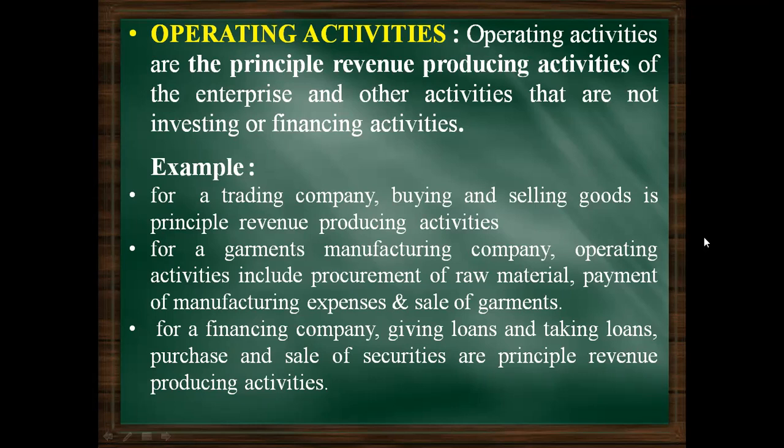For a garment manufacturing company, operating activities include purchase of raw material, payment of manufacturing expenses, and sale of garments. For a financing company whose main business is lending and borrowing and buying/selling securities, giving and taking loans and purchase/sale of securities are the principal revenue-producing activities. So for different organizations, principal revenue-producing activities may differ.